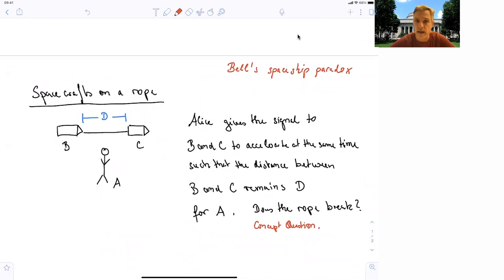So again, we have Alice as an observer, observer in a reference frame A, observing two spacecraft. They're identical spacecraft. They have the same engines. And they're separated by distance D.